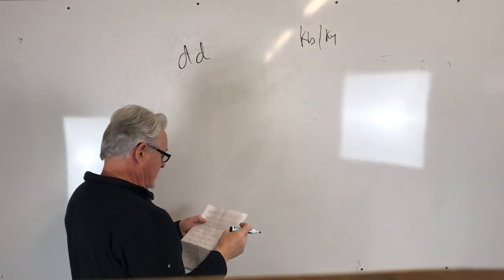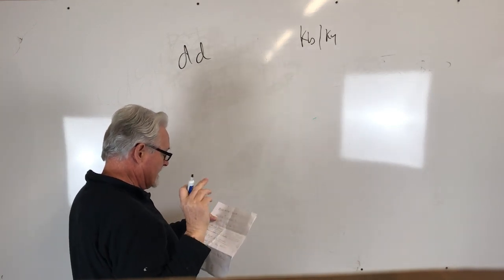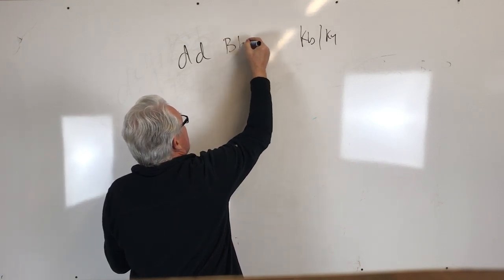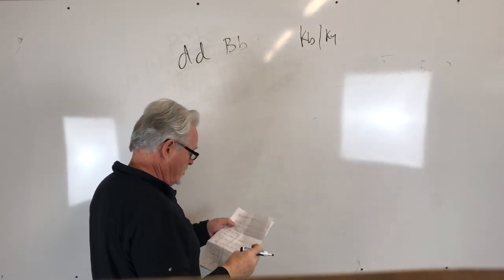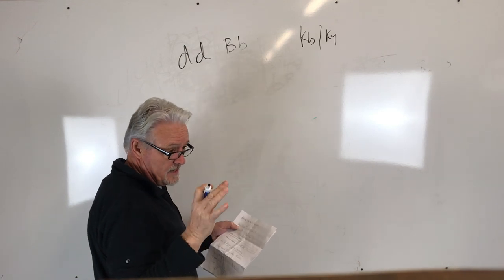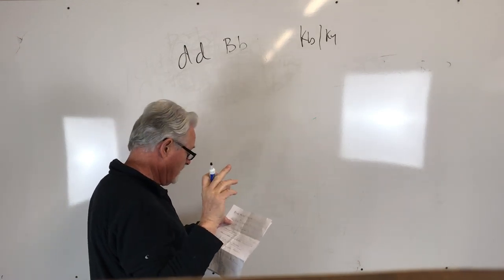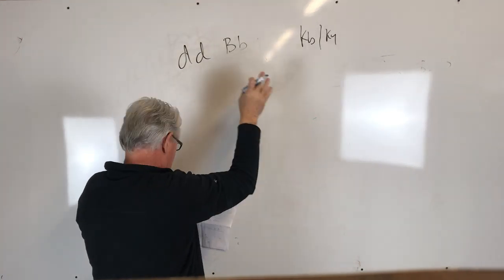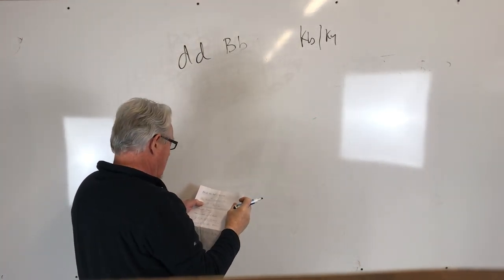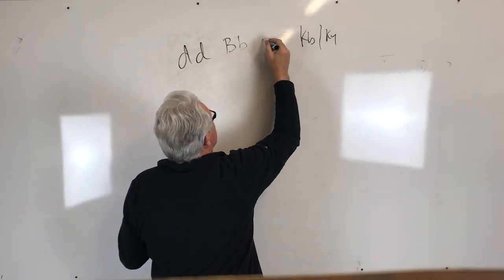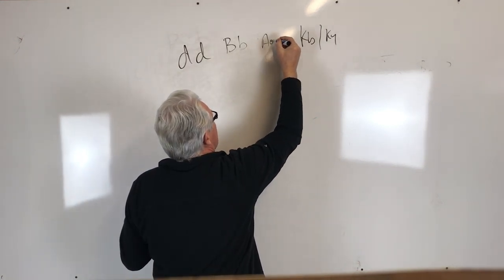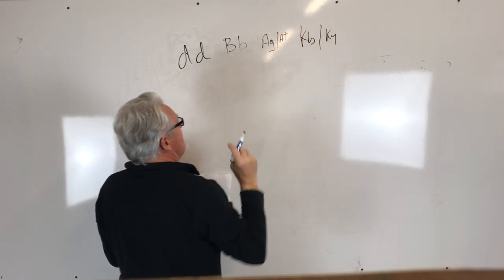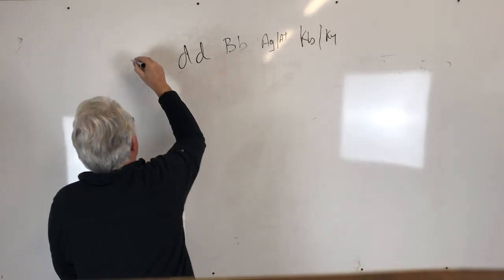She says it had a lilac daddy. If it has a lilac daddy, it has to have one copy of chocolate because lilacs are little b, little b - it has to give chocolate away every time. It can't have two copies of chocolate because then it would be a lilac. And daddy's got tan points, so we can assume this dog also has one copy of tan points and one copy of not.